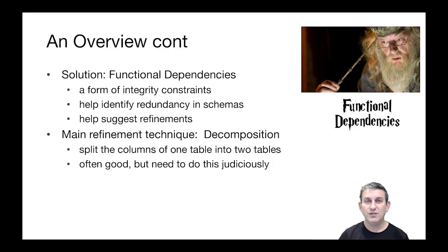The solution to redundancy is going to be what we call functional dependencies. They're a form of integrity constraint that we haven't seen yet, at least not in a general sense. They'll help us identify the redundancy in our schemas and then suggest refinements to get rid of that redundancy. The main refinement technique we'll look at is called decomposition. It splits the columns of one table into two tables, and in so doing, it can get rid of redundancy. It's often a good thing to do, but you don't want to do it unnecessarily, so we're going to try to do it judiciously.